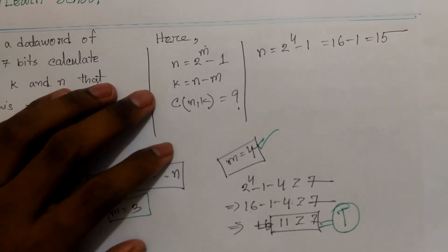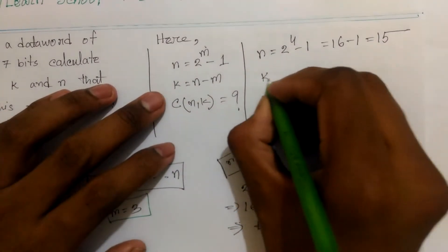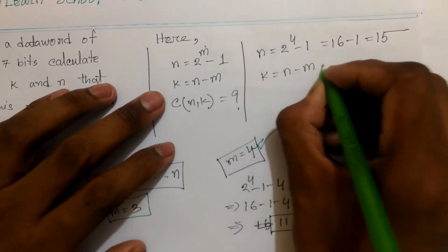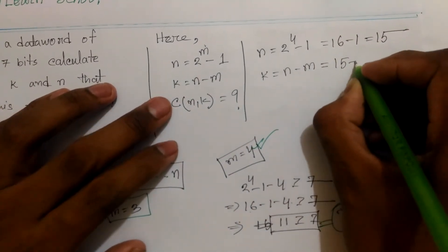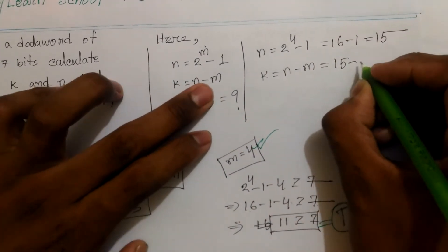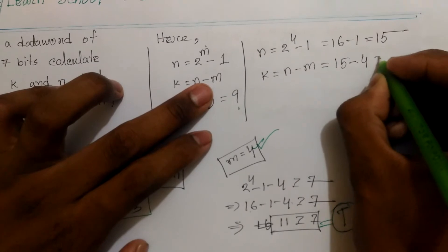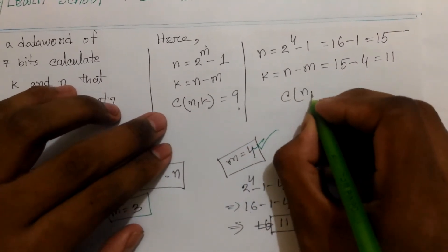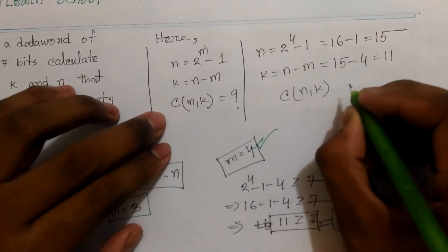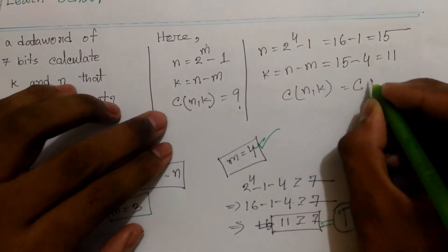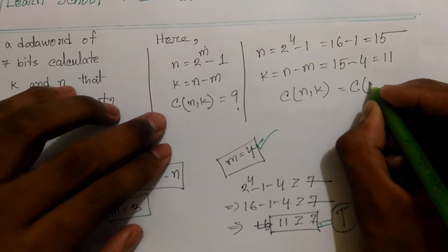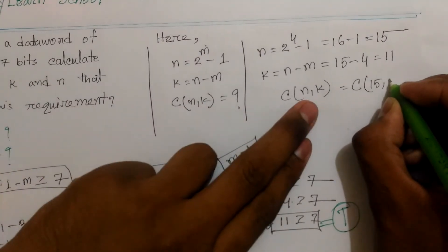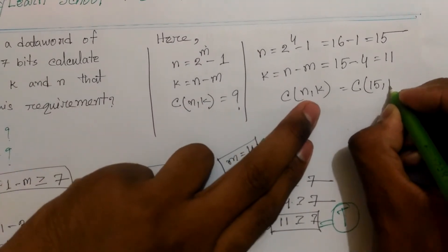k is equal to n minus m. n minus 5 minus m, m is equal to 4, is equal to 11. cn is equal to 5. k is equal to 11.